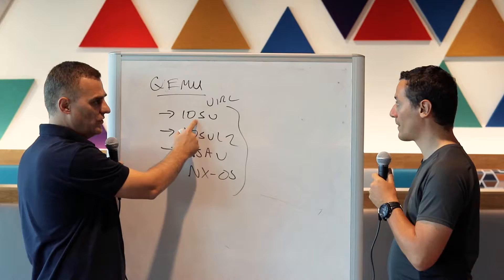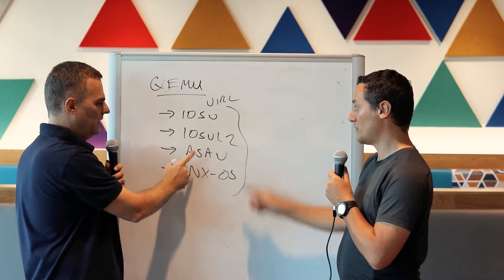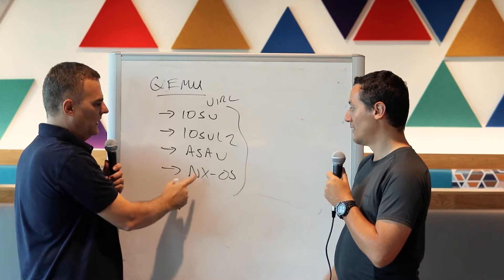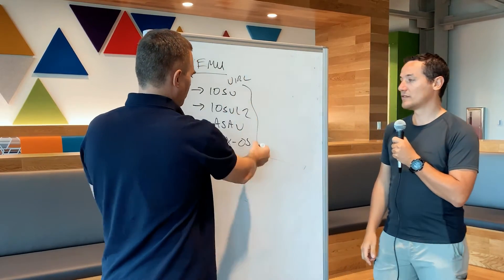You recommend if you want a router image you should use IOSV, if you want to switch IOSV L2, a firewall ASAV, and then like Nexus, Nexus OSV. But all of this comes from Virl.